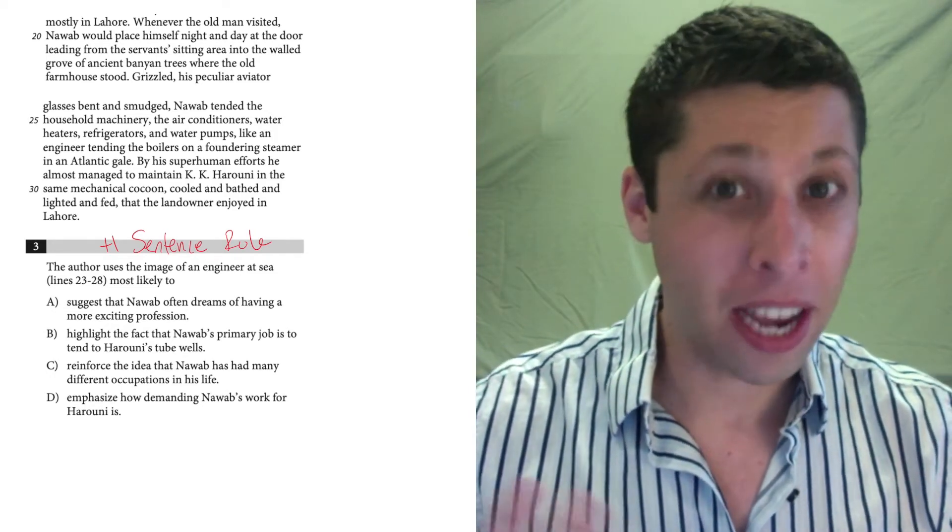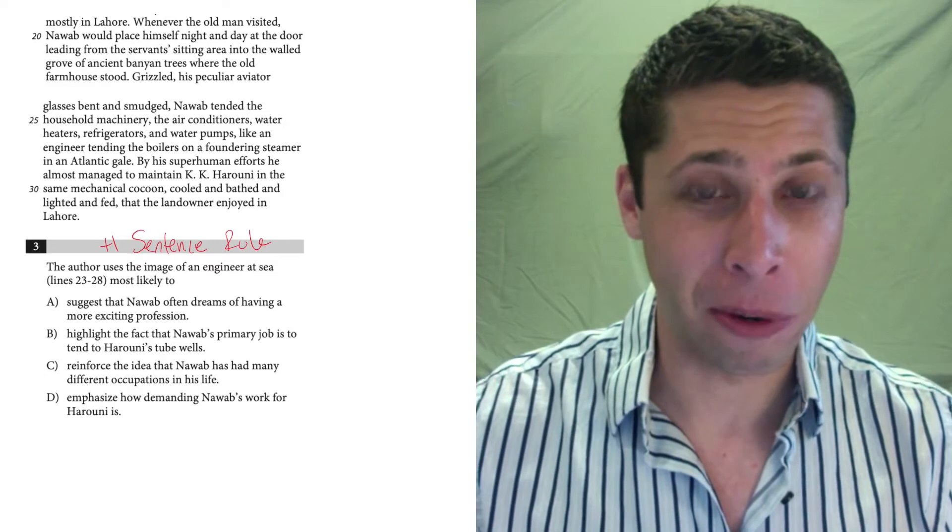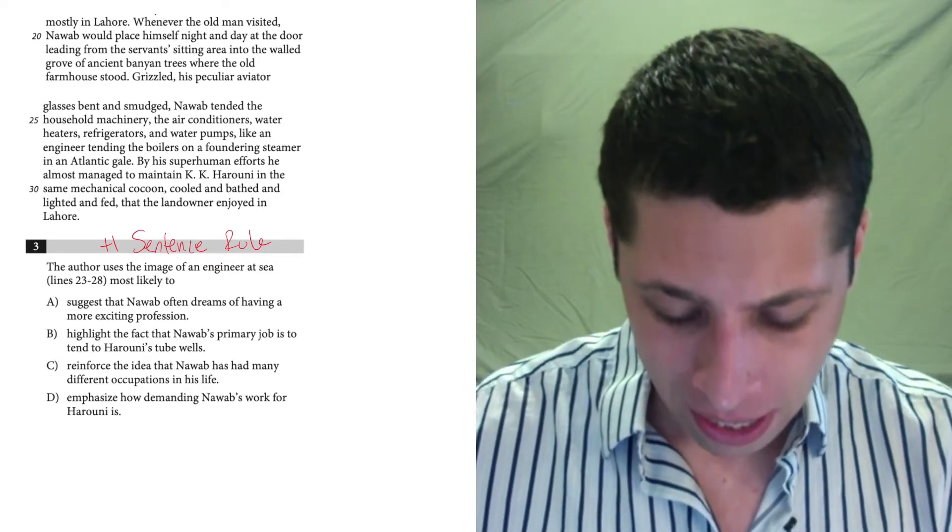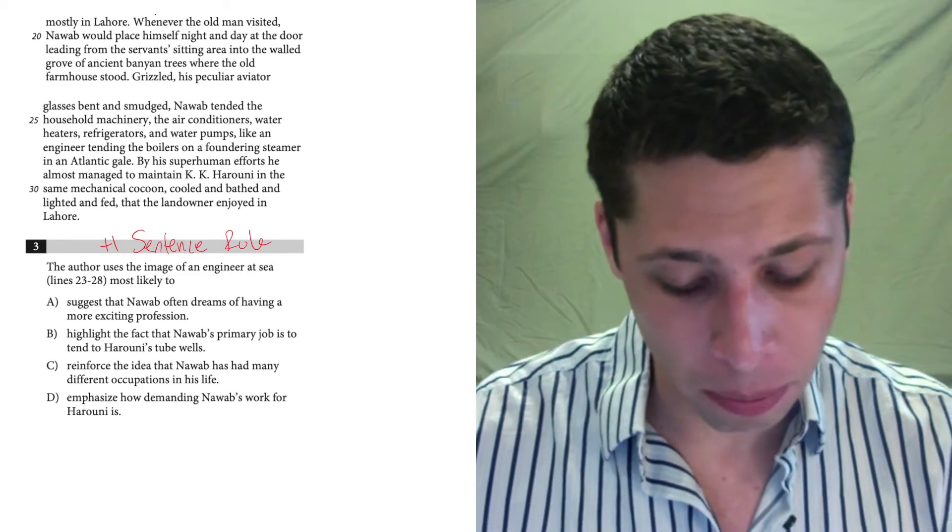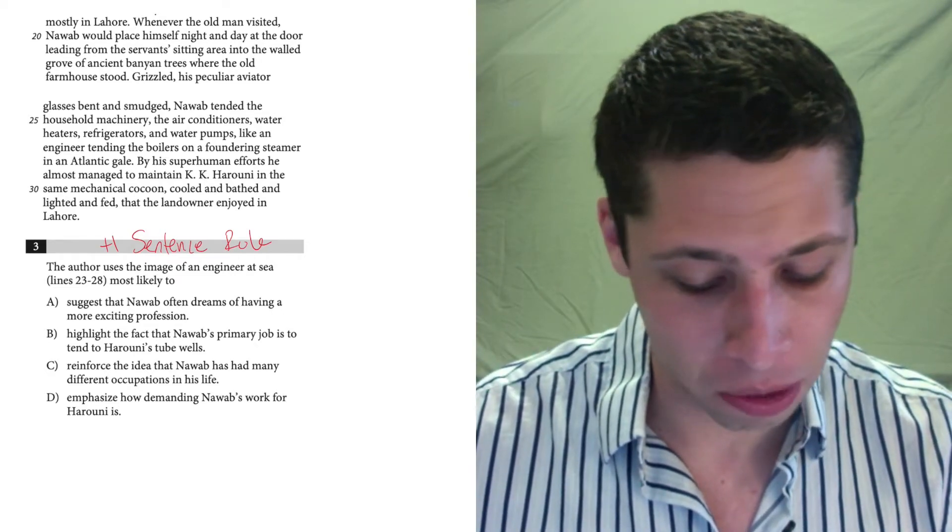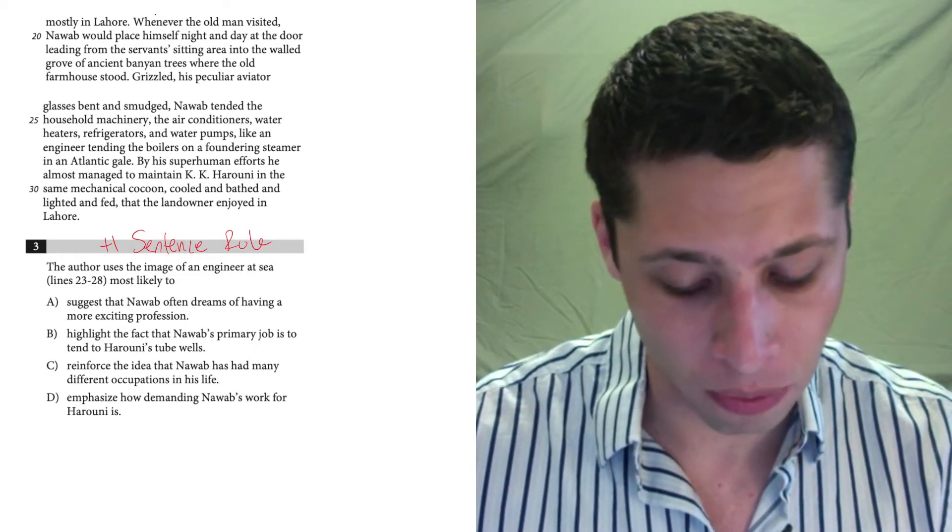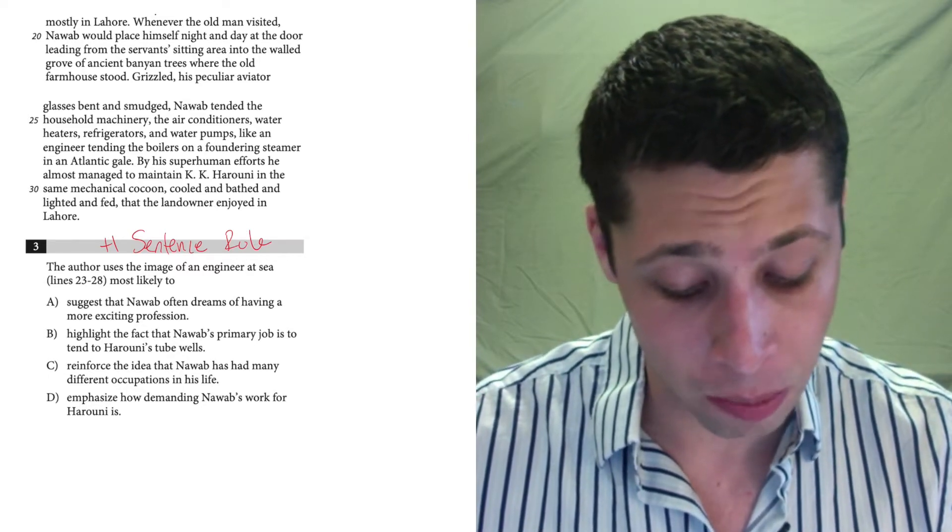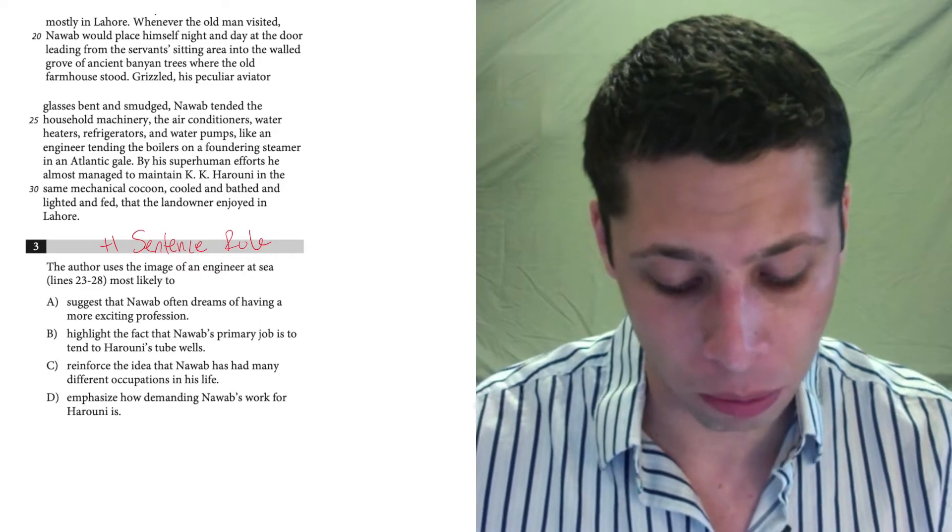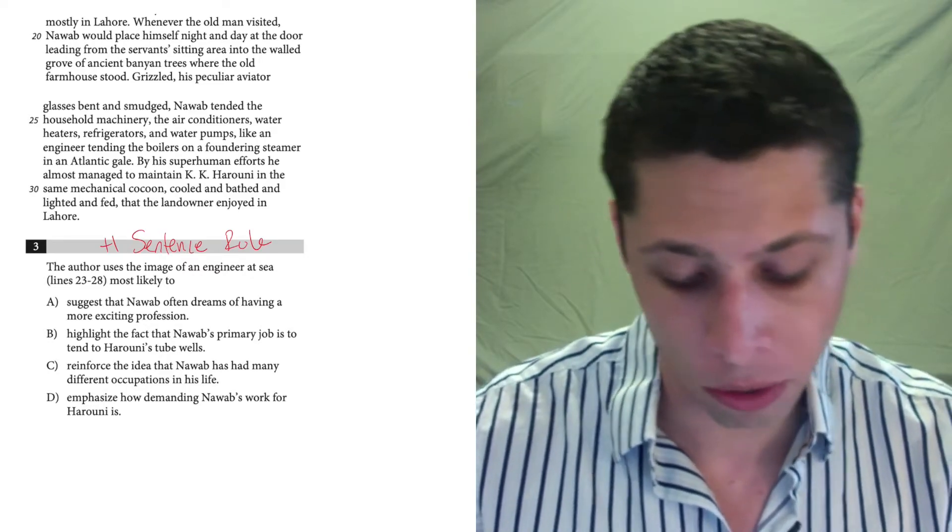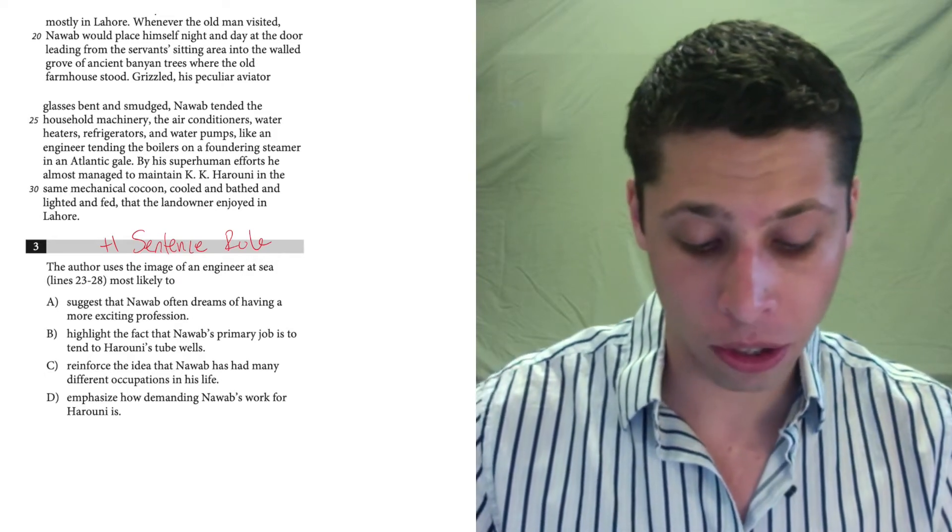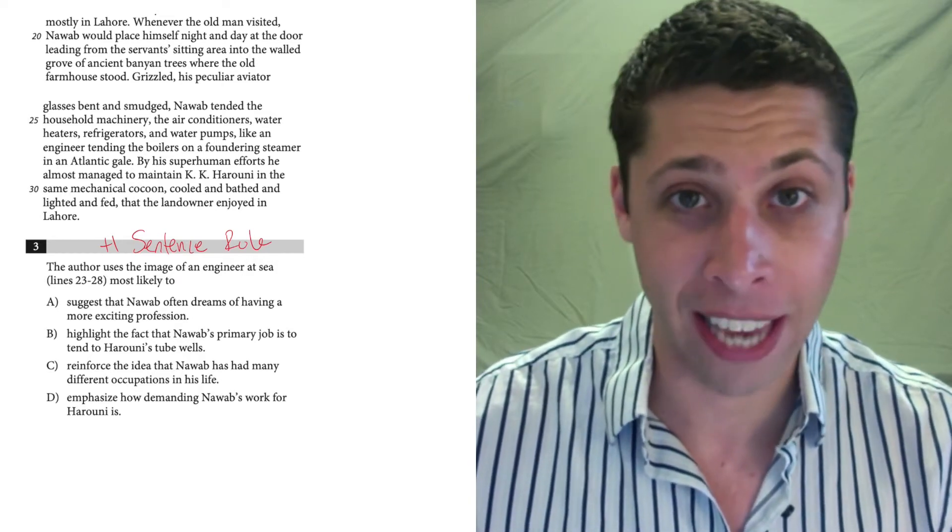So if we look at this, it's kind of weird. This is a great example of a question where the actual text is kind of hard to make sense of. So whenever the old man visited, Nawab would place himself night and day at the door leading from the servant sitting area into the wall grove of ancient banyan trees where the old farmhouse stood. Grizzled, his peculiar aviator glasses bent and smudged, Nawab tended the household machinery, the air conditioners, water heaters, refrigerators, and water pumps like an engineer tending the boilers on a foundering steamer in an Atlantic gale.